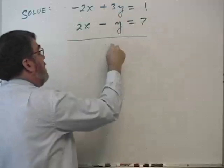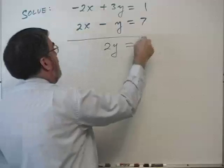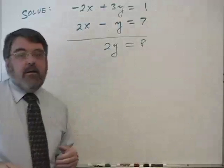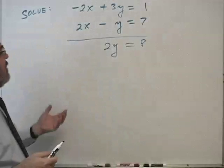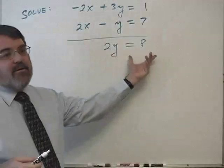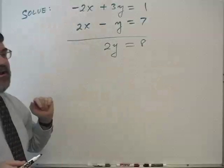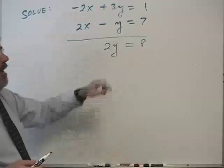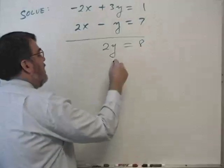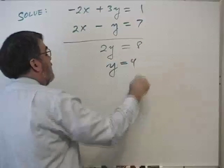3y minus y is 2y, and 1 plus 7 is 8. So by combining, or by adding these equations, we produce a simpler equation. x has been eliminated, and that's why this is called an elimination method. And now we can solve for y. Divide both sides by 2, y equals 4.